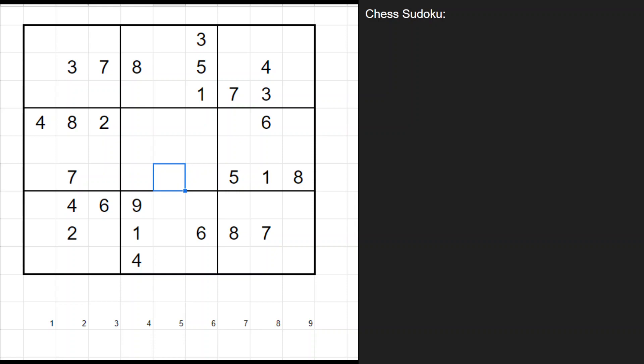It's a variant to regular Sudoku that includes some extra restrictions on where certain digits can be placed. Just like in regular Sudoku, each row, column, and 3x3 box must contain the digits 1 through 9 without repeating.